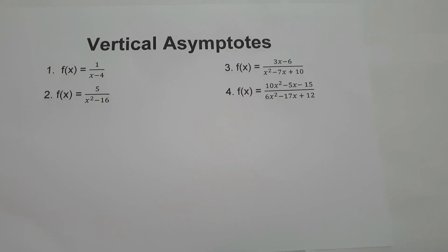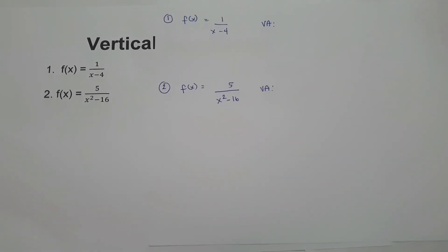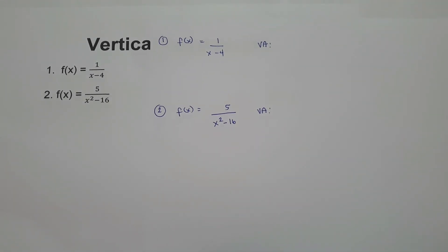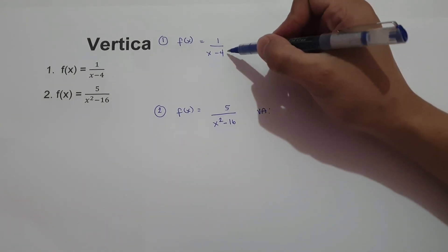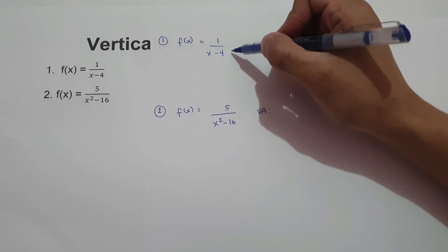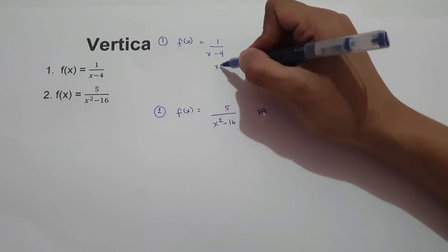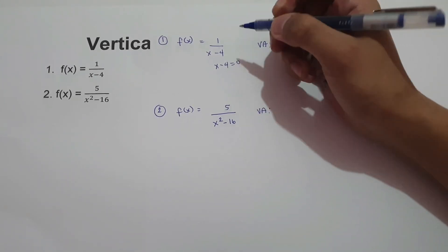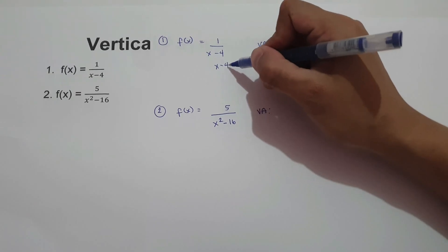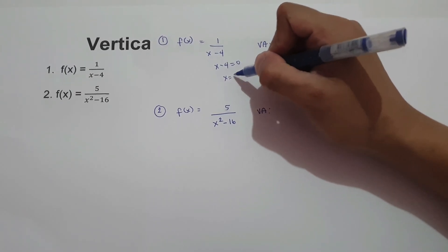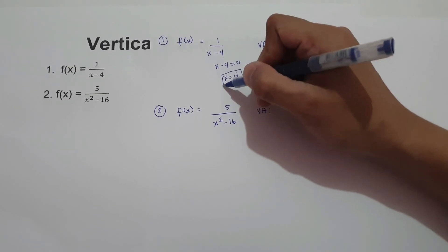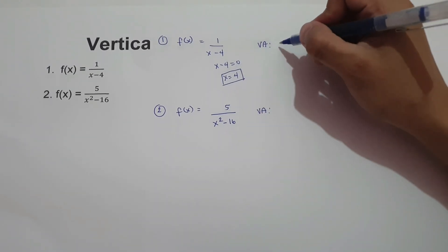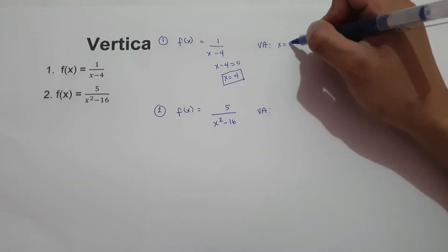So let's take the first example. On number 1, we have f of x equals 1 over x minus 4. How do we find the vertical asymptote of this function? We simply equate x minus 4 to zero. So x minus 4 equals zero, meaning x equals 4. So our vertical asymptote is 4.